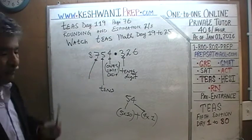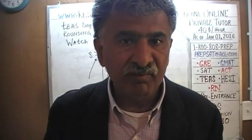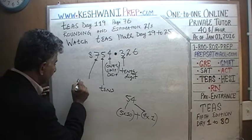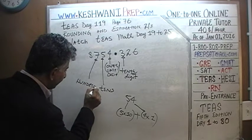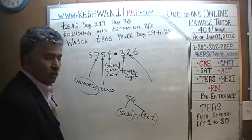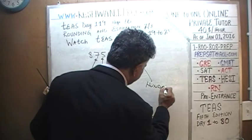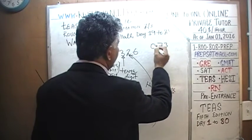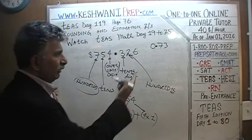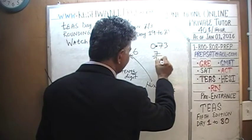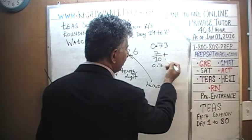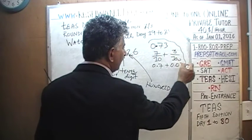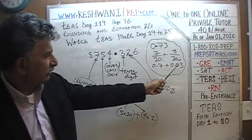What does the 7 tell us in the number 754? It tells us how many hundreds we have — 7 hundreds. So 7 is called the hundreds digit. As opposed to the 2, which after the decimal point would be the hundredths digit. For example, if you put down 0.73, this tells us that this quantity is made up of 7 tenths (0.7) and 3 hundredths (0.03), so 0.7 plus 0.03 gives us 0.73.